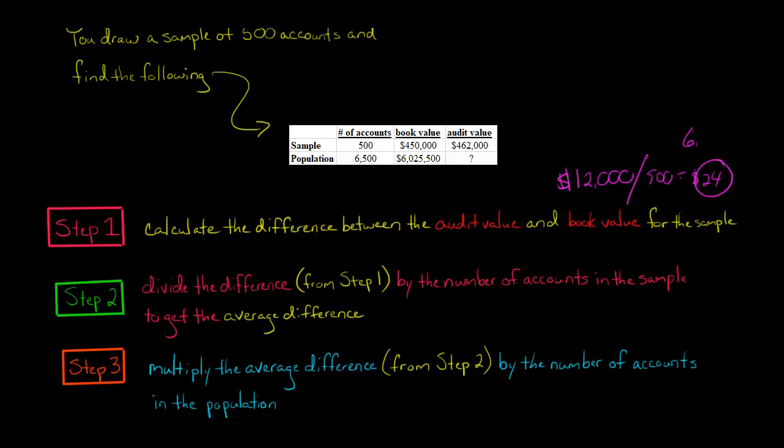We're going to take 6,500 and multiply it by $24. That comes out to $156,000.